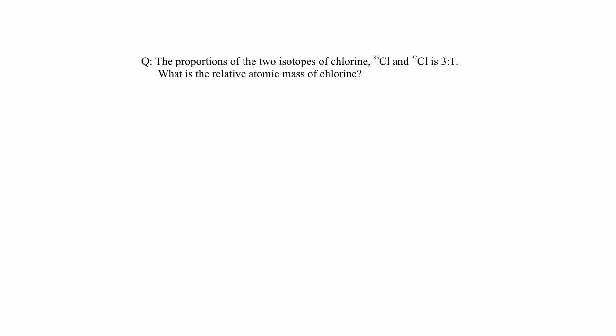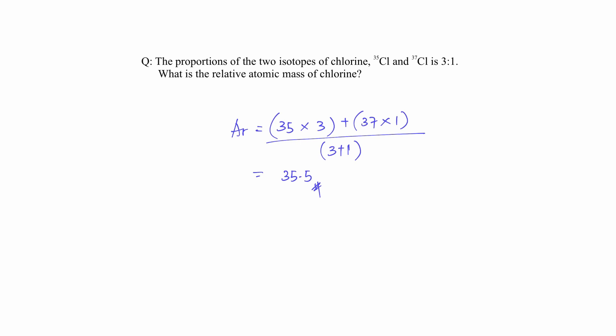Besides percentage abundance, we can also be given the relative ratio of isotopes. For example, the relative ratio of isotopes of chlorine is given. We use the same method to get the relative abundance. The molar mass of chlorine-35 is 35, times its relative ratio of 3; chlorine-37 has a relative ratio of 1. We divide by the total relative abundance, which is 3 plus 1 equals 4. This gives a relative atomic mass of chlorine of 35.5.